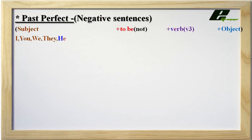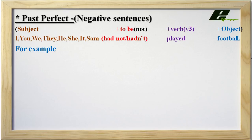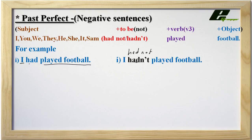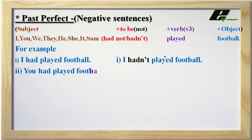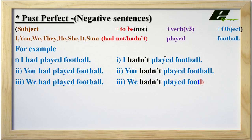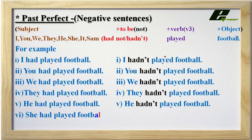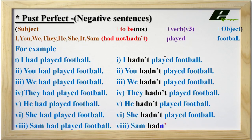Now let us see negative sentences using the short form 'hadn't'. I had played football → I hadn't played football. You had played football → You hadn't played football. We hadn't played football. They hadn't played football. He hadn't played football. She hadn't played football. Sam hadn't played football.